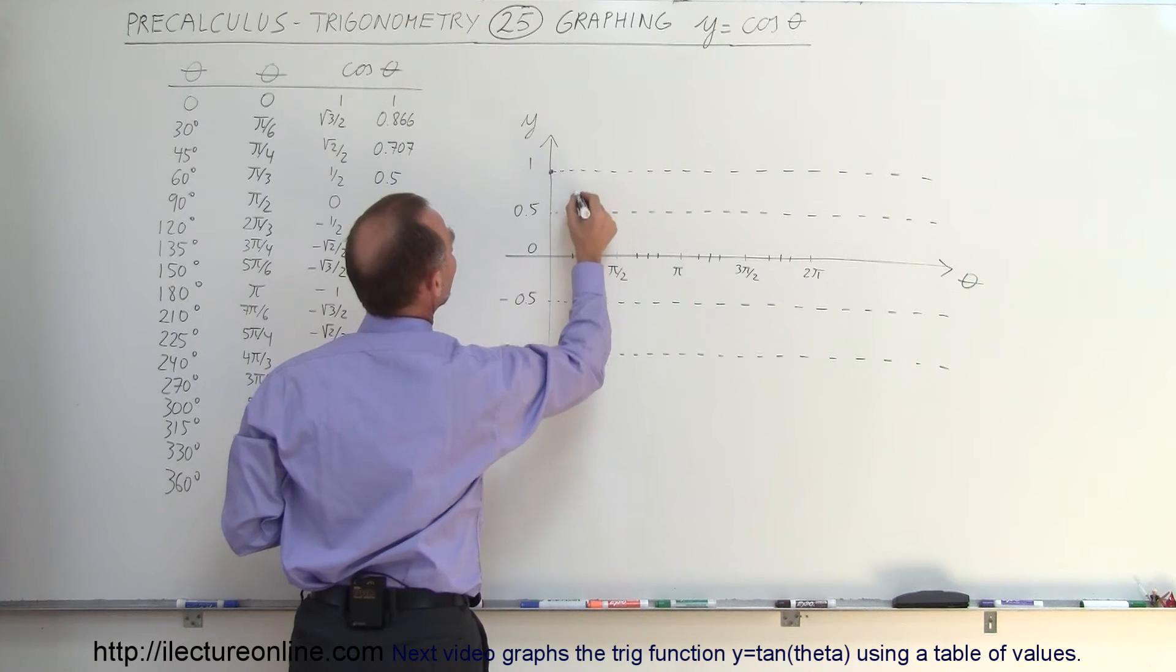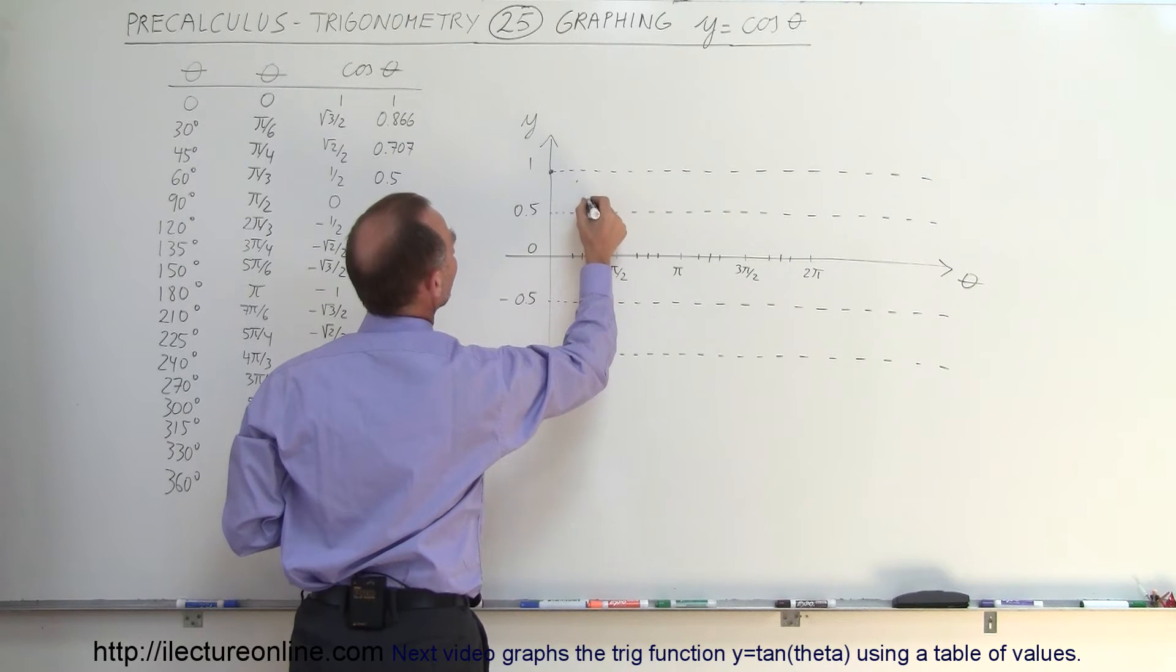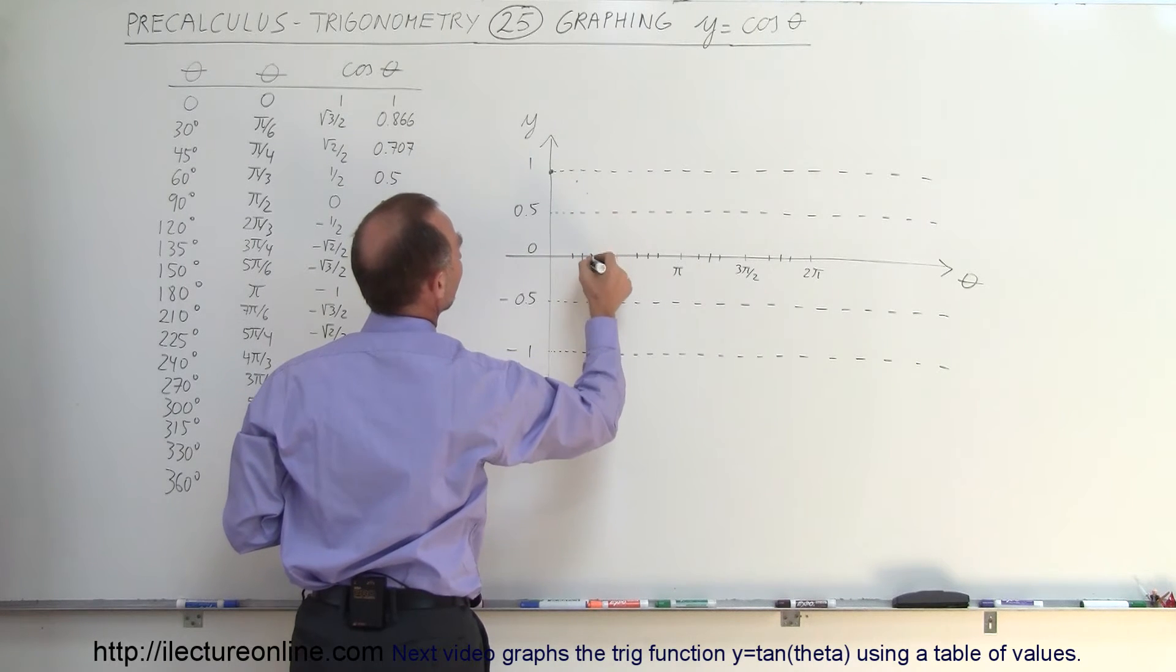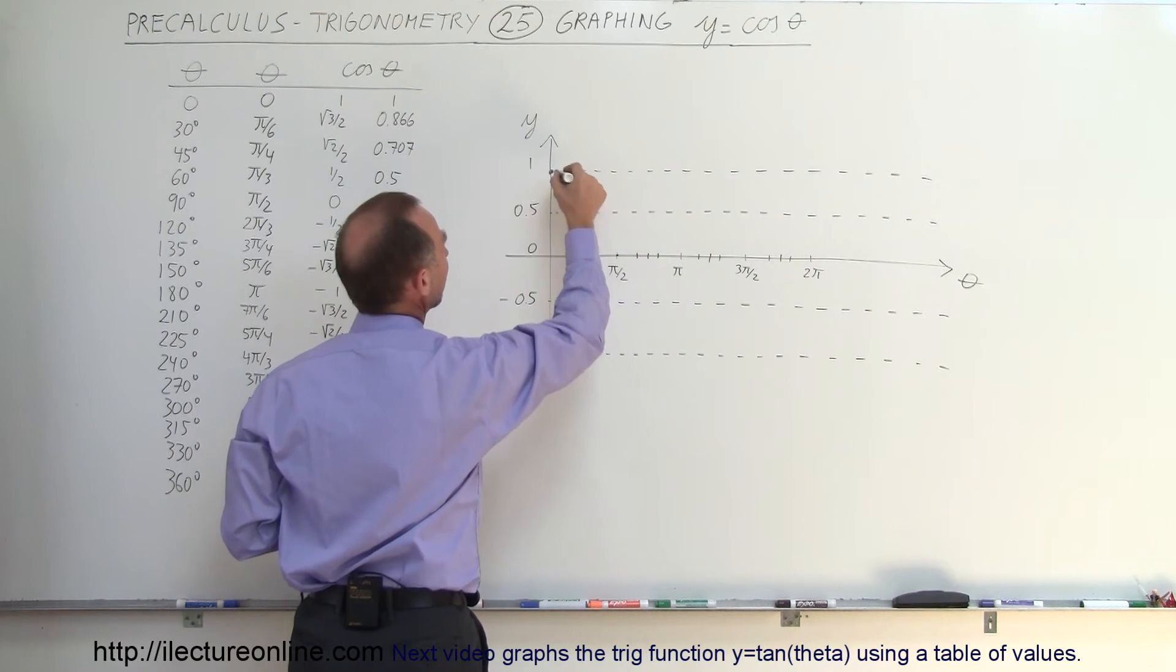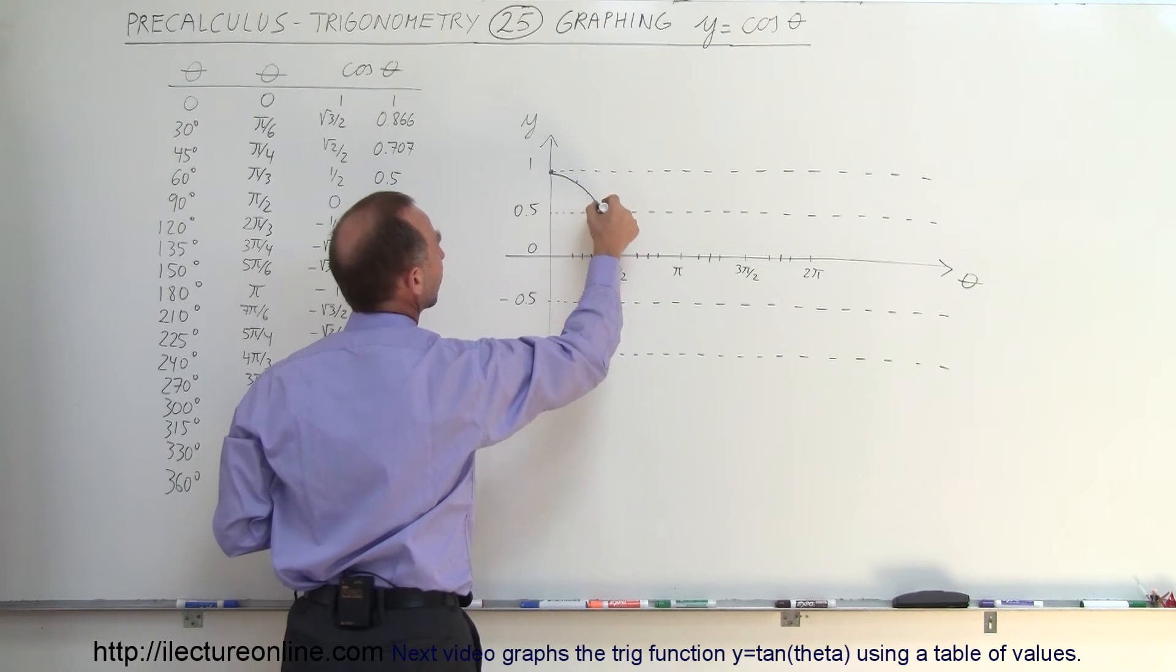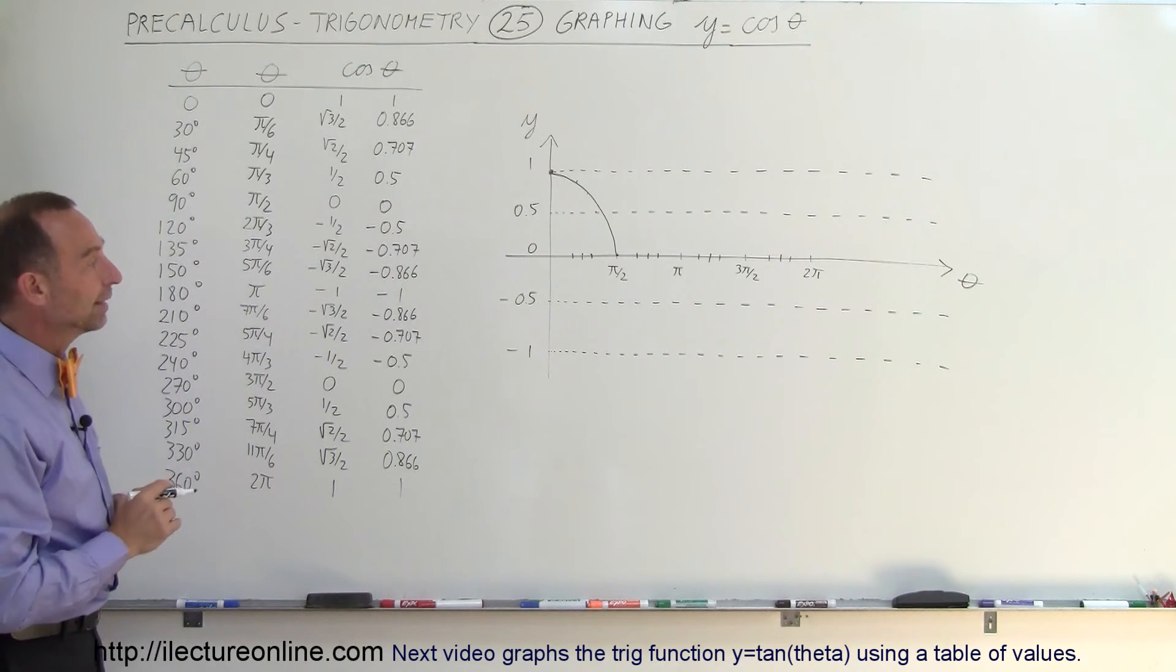For an angle of 30 degrees, the value is 0.866. For 45 degrees, it's 0.707. For 60 degrees, it's 0.5, and for pi over 2 or 90 degrees, it's 0. So the cosine of the angle looks like that for the first 90 degrees.